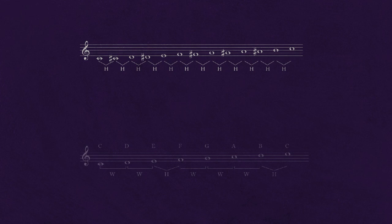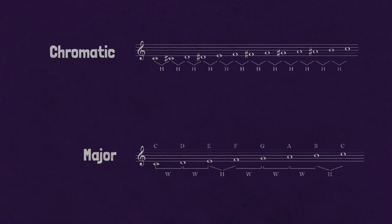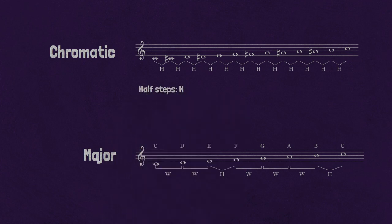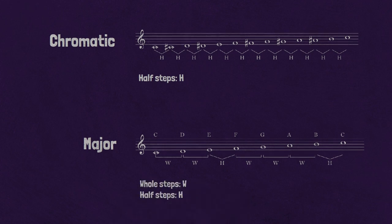This example illustrates a chromatic and a major scale, with whole and half steps identified for comparison. The chromatic scale steps are all the same size — a half step, or H. In contrast, the pattern of whole (W) and half steps in the major scale is W, W, H, W, W, W, H. When you hear a half step in a major scale, you know it is in one of two specific locations, while in a chromatic scale the half step could be anywhere.